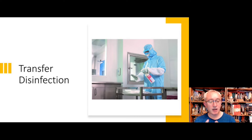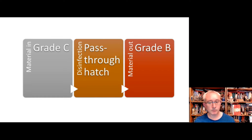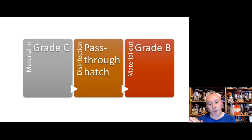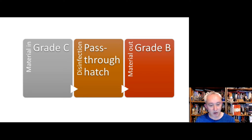Transfer disinfection is about getting items from a lower-grade clean room into a higher grade. We're transferring materials into the clean room, which begins when an operator opens the pass-through — be that a decon chamber or a transfer hatch — on the dirty air side. Items are either manually disinfected and placed in, or there's an automated disinfection cycle, with an interlock mechanism that locks for a period of time.